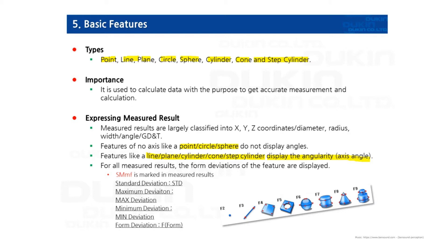And when you measure any of those features on the part, SMMF will output as an F item. S stands for Standard Deviation, capital M stands for Maximum Deviation, and small m stands for Minimum Deviation.